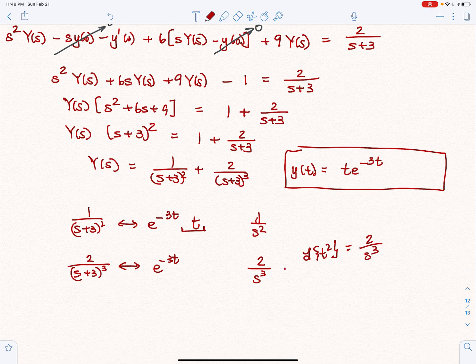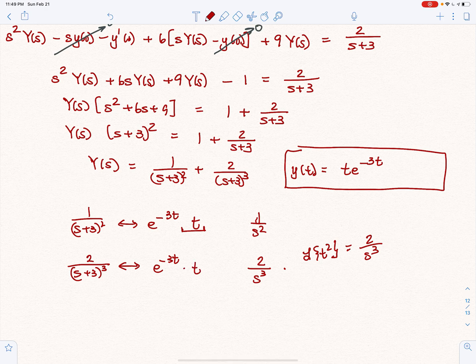So that means that we're golden. That means we're T e to the negative 3T times T squared. So this is plus T squared e to the negative 3T.